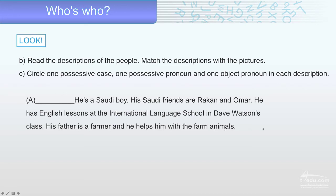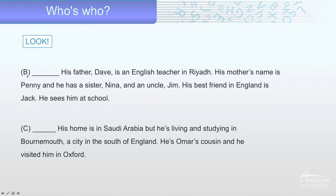Who is this one? Let's go to B. His father Dave is an English teacher in Bria. His mother's name is Penn and he has a sister Nina and an uncle Jim. His best friend in England is Jack — he sees him at school.